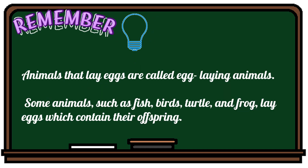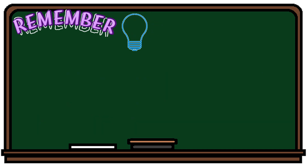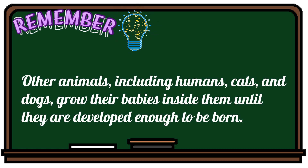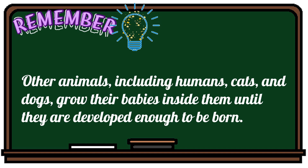Remember, animals that lay eggs are called egg-laying animals. Some animals such as fish, birds, turtle, and frog lay eggs which contain their offspring. Other animals, including humans, cats, and dogs, grow their babies inside them until they are developed enough to be born.